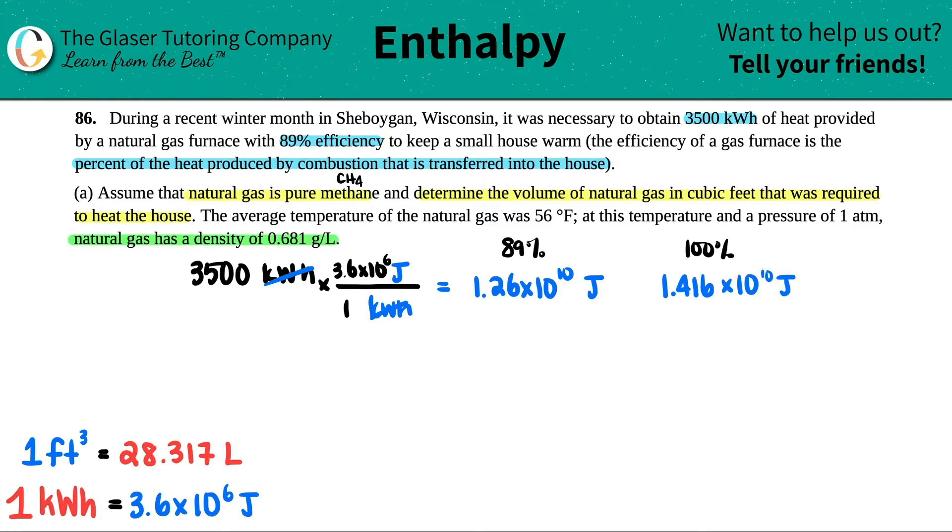Methane gas plus O2 - combustion is always plus O2 - yields CO2 and H2O. I'm putting it as a gas because this is high heat, so it should be steam and not liquid water. To balance, I have four hydrogens, so I'll put a 2 here. I have four oxygens total, so I'll put a 2 in front of O2.